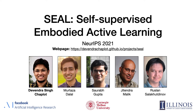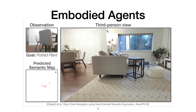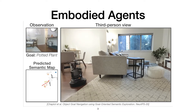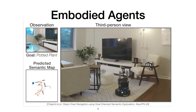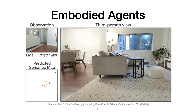Hi everyone, my name is Devendra and I'm going to talk about our NeurIPS 2021 paper on self-supervised embodied active learning. Modern computer vision methods leverage huge amounts of internet data to excel at tasks such as segmentation and object detection. Following the success of internet computer vision, there has been a lot of interest in training embodied agents to perform intelligent tasks in the physical world.